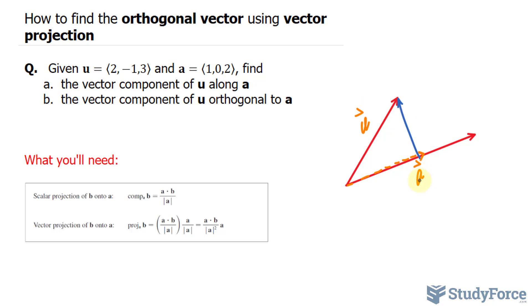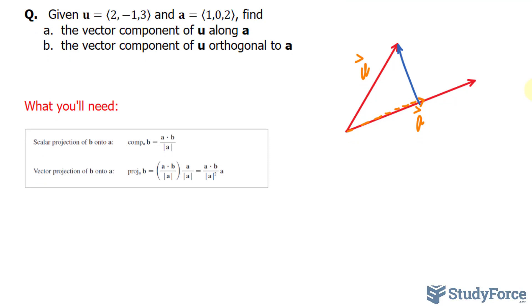So once again, let's find the vector projection of u along a. We've done this in the past, and we'll use the formula right here. We'll take the dot product of u and a, and that can be done by multiplying and adding the corresponding x, y, and z components. So 2 times 1 plus negative 1 times 0 plus 3 times 2.